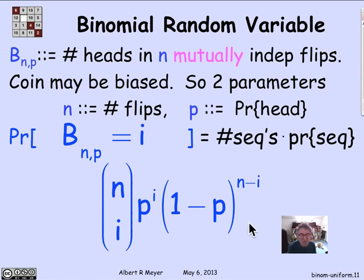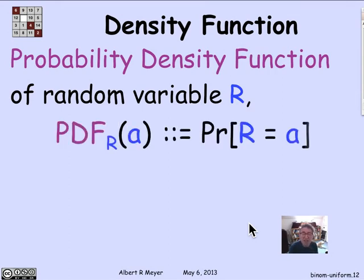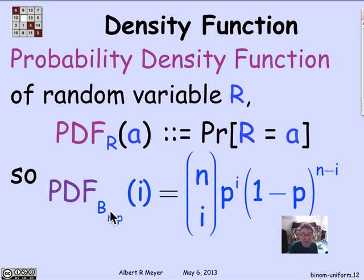This is a pretty basic formula — if you can't memorize it, make sure it's written on any crib sheet you take to an exam. The probability density function abstracts out some properties of random variables: it tells you the probability that the random variable takes a given value for every possible value. The PDF of R is a function on the real values telling you, for each value A, the probability that R equals A.